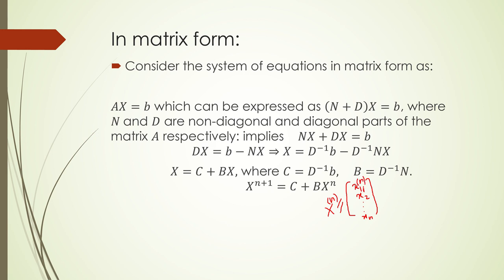X^n means the values from the previous iteration, and X^(n+1) is the updated value. We set these iterations using X^(n+1) = c + B·X^n, which is simple to implement in a calculator and also straightforward to implement in MATLAB.